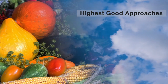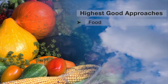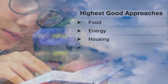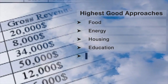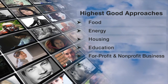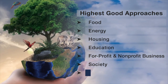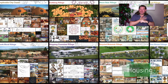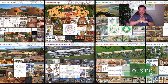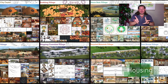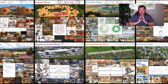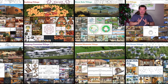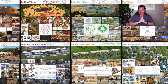This includes highest good approaches to food, energy, housing, education, for-profit and non-profit business creation, society, and true earth stewardship. My name is Jay Sable and I'm the Executive Director of the One Community 501c3 non-profit organization. One Community is bringing together people with the consciousness and the desire for the highest good of all life on this planet to build sustainable, regenerative, and self-replicating teacher demonstration hubs as a pathway to global sustainability.